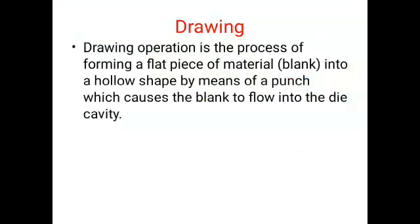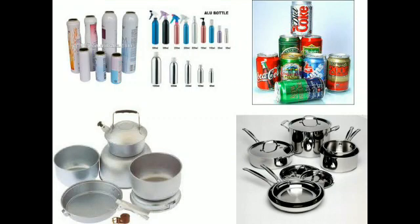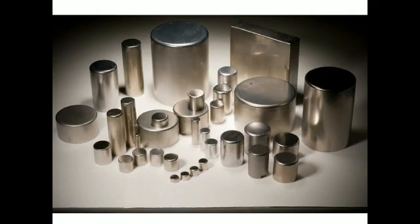Today we will discuss about drawing. Drawing operation is the process of forming a flat piece of material — that is, a blank — into a hollow shape by means of a punch which causes the blank to flow into the die cavity. A few examples of products manufactured by the drawing process are on the screen: we can see some tins, some utensils, some bottles. Some more examples of utensils we can also observe on the screen.